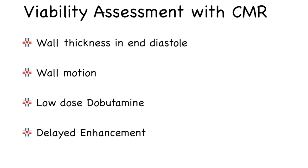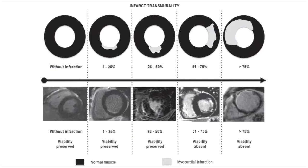We look at wall thickness in end diastole, wall motion of the segments, and delayed enhancement imaging. In doubtful cases, we use low-dose dobutamine stress to assess for viability. In delayed enhancement imaging, it is critical to know that any segment with more than 75% transmurality of infarction is non-viable, whereas anything less than 50% transmurality is viable. Segments with 51 to 75% infarction may be viable or non-viable, and it is important to look at their wall motion abnormality.